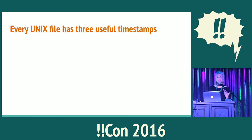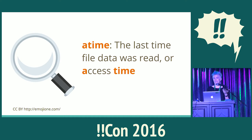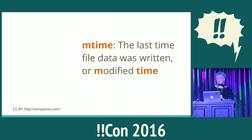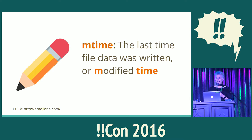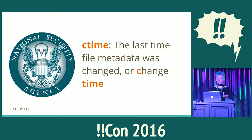The first thing you need to know is that every Unix file has three useful timestamps. The first one is the access time, which is the last time that the file was read, also known as the A-Time. The M-Time is the last time the file data was written, or the modified time. And the C-Time is the last time the file metadata was changed, or the change time.